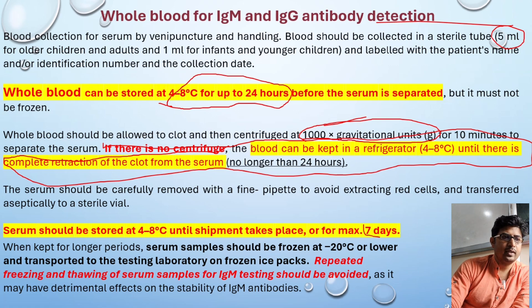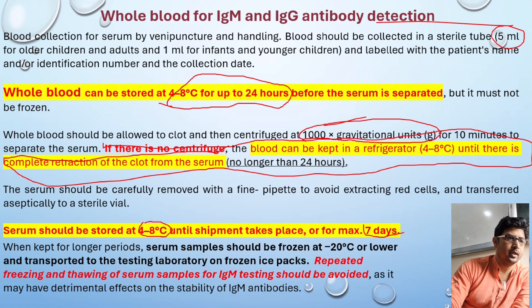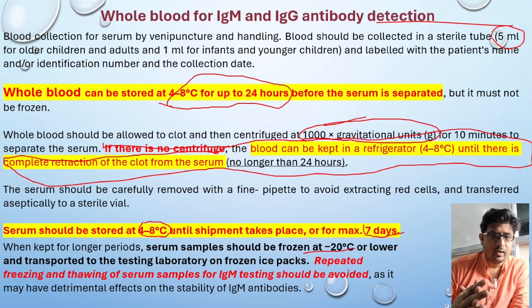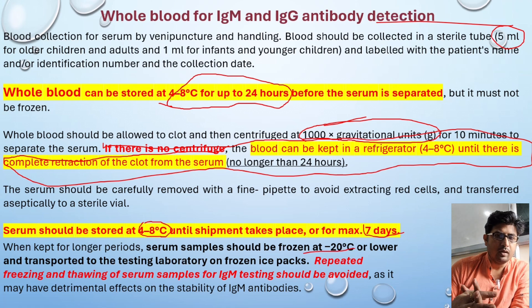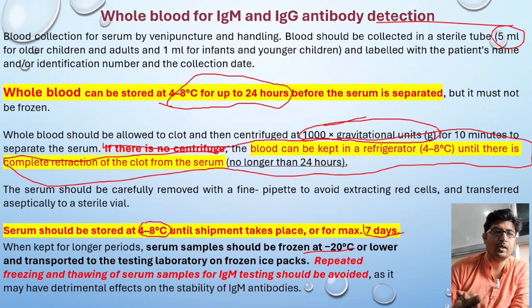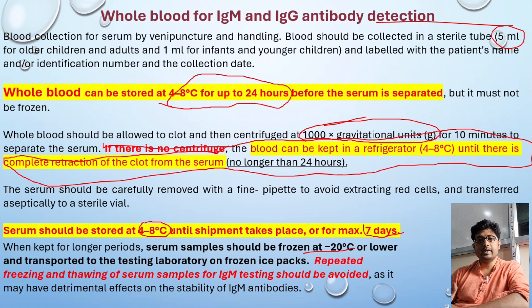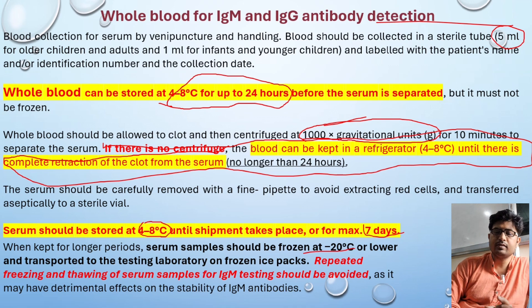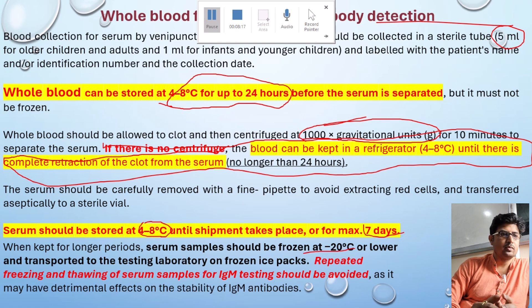After isolating serum from blood, it can be stored at 4 to 8 degrees centigrade for up to seven days prior to shipment or processing. For longer periods, serum samples should be frozen at minus 20 degrees centigrade or lower. Repeated freezing and thawing is not recommended for any sample, as this degrades quality and affects IgM and IgG antibody structure, since these are glycoprotein structures sensitive to rapid temperature changes.